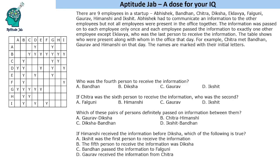Hello everyone, welcome to Aptitude Jab. This set says that there are nine employees in a company, named A to I. Abhishek had to communicate information to the other employees, but not all employees were present in the office together. The information was passed to each employee only once, and each employee passed it on to exactly one other employee, except Aklavya who was the last person to receive the information. So Abhishek starts the chain and Aklavya receives it at the end. The table shows who were present along with whom in the office that day.